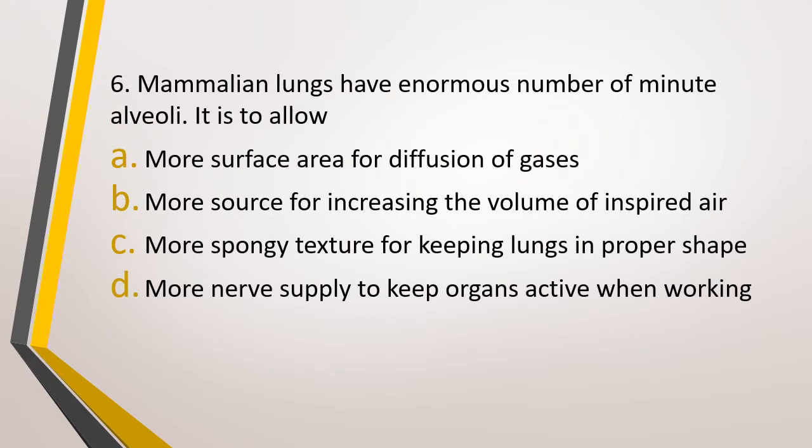Question number 6. Mammalian lungs have enormous number of minute alveoli. It is to allow. Option A: More surface area for diffusion of gases. Option B: More source for increasing the volume of inspired air. Option C: More spongy texture to keep lung in proper shape. Option D: More nerve supply to keep the organ active when working. The correct answer is option A, to increase the surface area for diffusion of gases.